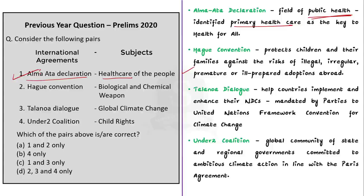The second pair is Hague Convention — Biological and Chemical Weapons. The Hague Convention actually protects children and their families against the risks of illegal, irregular, premature, or ill-prepared adoptions abroad. So it is about protection of children, not about biological and chemical weapons. Therefore it is an incorrectly matched pair.